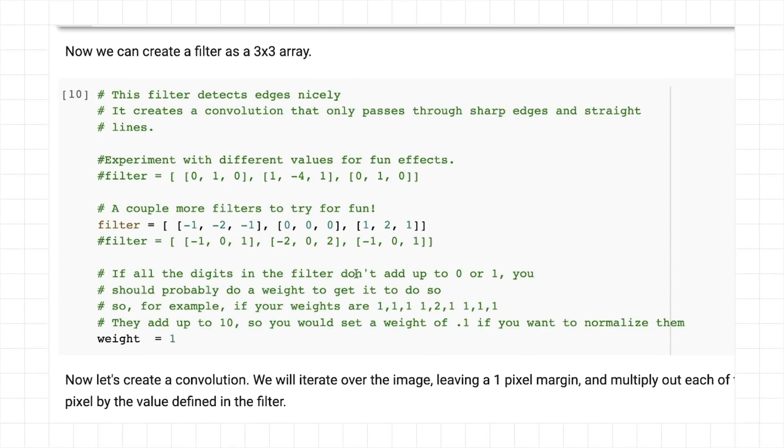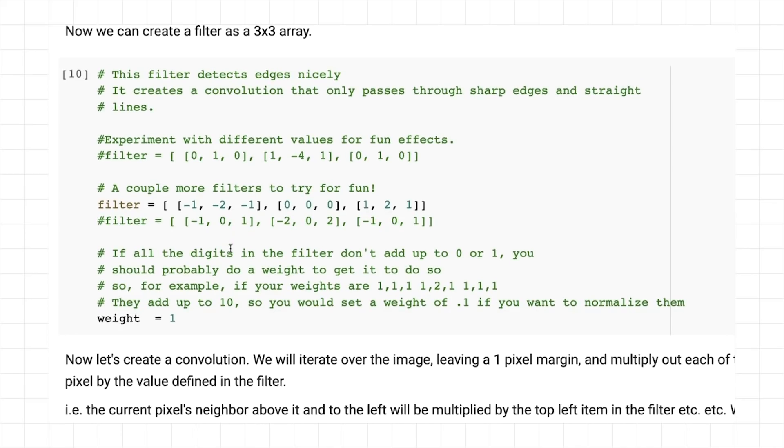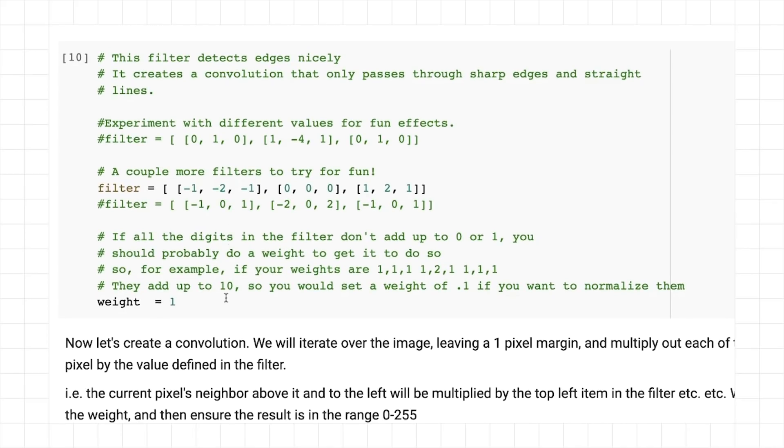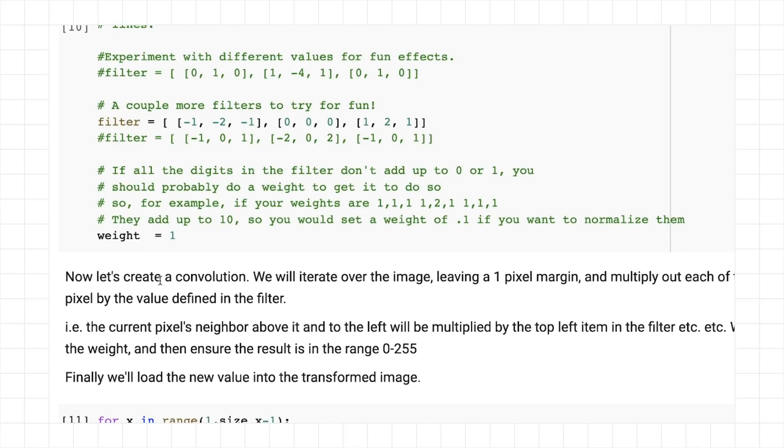And here I've defined a number of different filters. Remember the three by three filters that we were showing? I'm just implementing them as three arrays of three items. So for example, we use this one filter here. And one little thing that I've done is added a weight to this, so that one of the things is that all the digits should add up to one. But if they add up to something more than that, then you can multiply them out by a factor to normalize them. So for example, if they added up to 10, you could set the weight to 0.1, so the final result would be normalized back to 1.